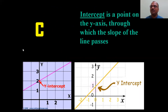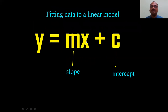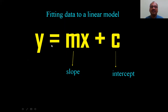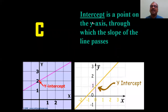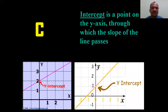Now let's look at c — the intercept. This is the x-axis and y-axis. If you know y and the remaining values you can find x; if you know x and y you can find the others. The intercept c is a point on the y-axis through which the slope of the line passes. See here — the intercept is 2 because it is a y-value. Here the intercept is 1, because the line passes through that point.